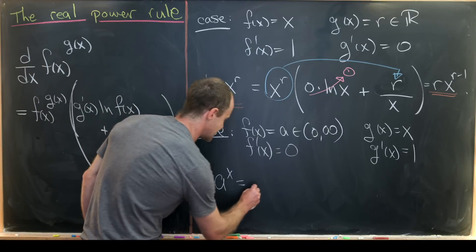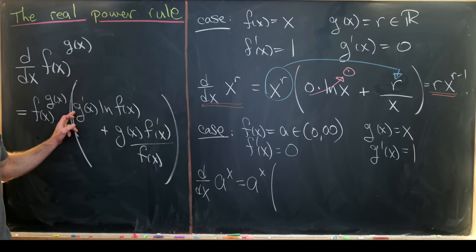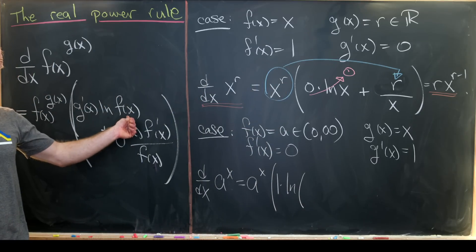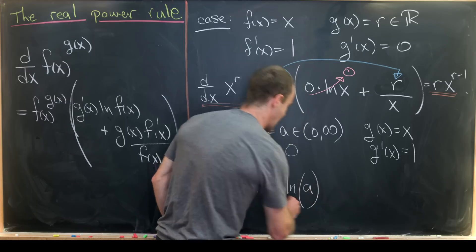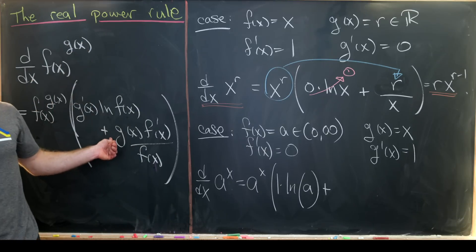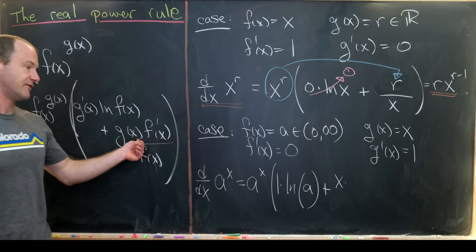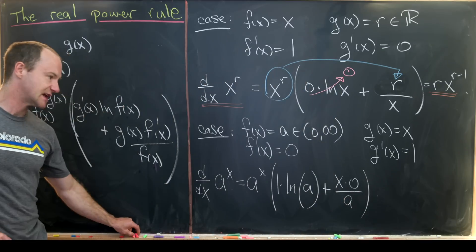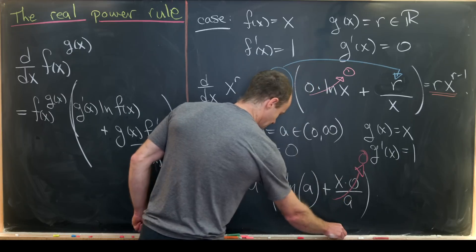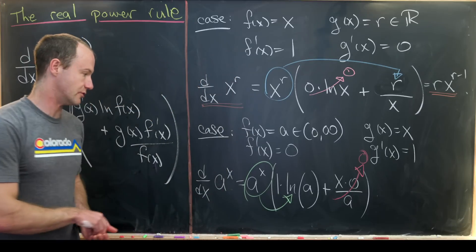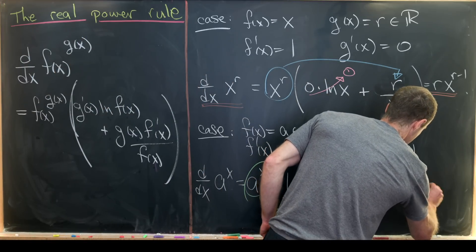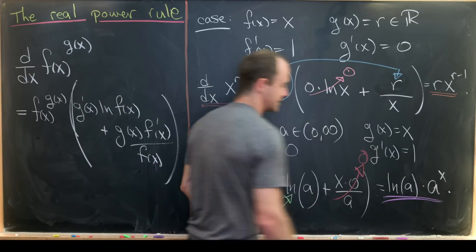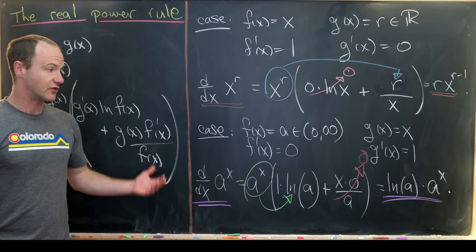Using our formula, that gives us a^x times the quantity: g prime, which is one, times the natural log of f(x) — which is ln(a) — plus g(x), which is x, times the derivative of f(x), which is zero, over f(x), which is a. The second term becomes zero, and distributing a^x gives us ln(a) times a^x. Reading off both sides, we've retrieved the standard formula for the derivative of an exponential function.